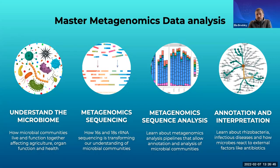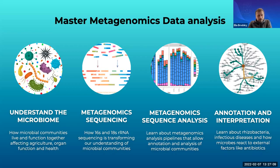Once we have that sequencing data, we need to understand what we can do with it — how do we go from raw sequences of individual genomic elements to some kind of interpretable image or statistical comparison. Here we'll talk about diversity, presence and abundance, and different types of functionality that some of these microorganisms can be associated with.